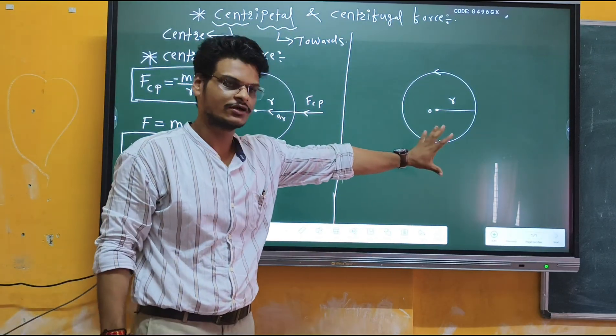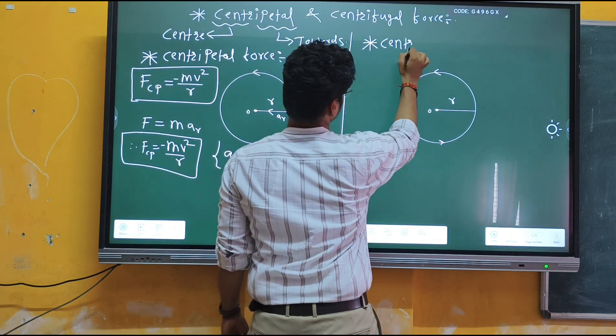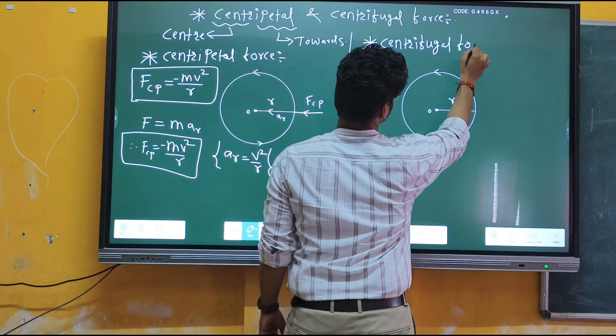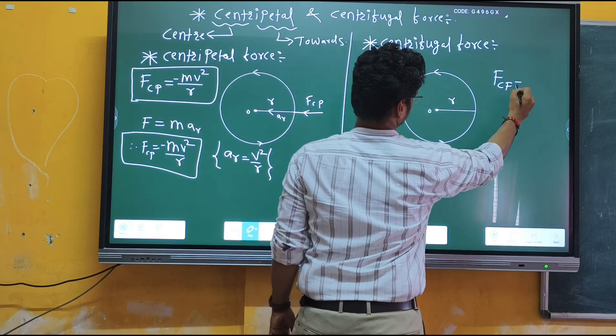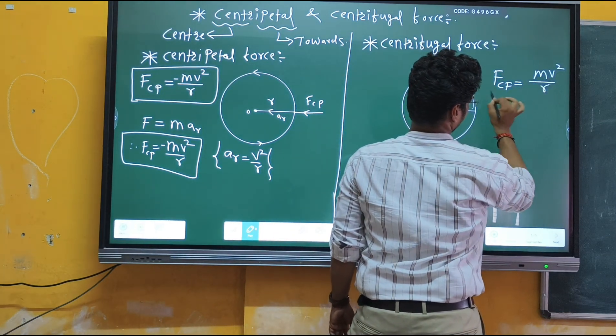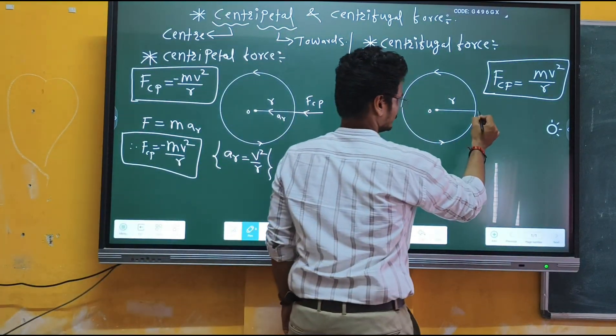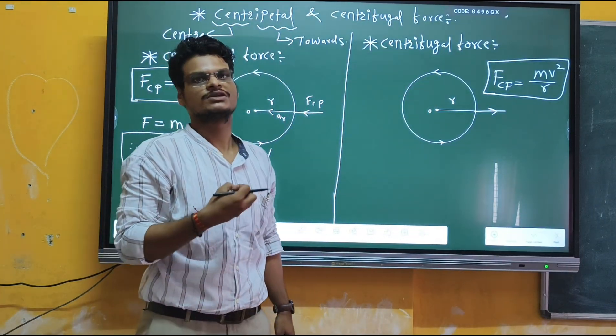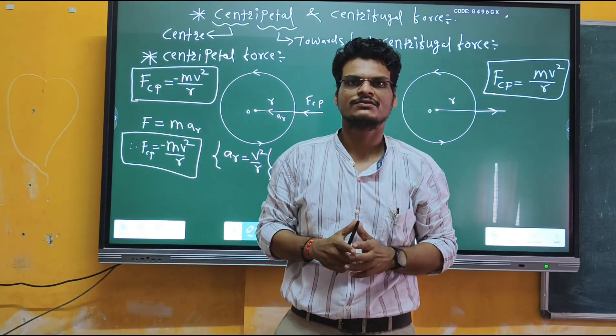The same concept applies to centrifugal force. Centrifugal force is denoted by F_cf. The formula is the same, MV²/R, but with a plus sign. Why? Because this force acts along the radius but away from the center of the circle. That's the difference between centripetal force and centrifugal force. Thank you.